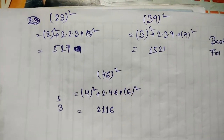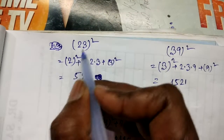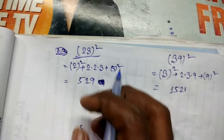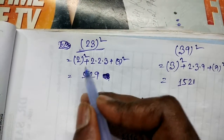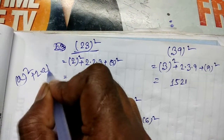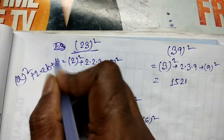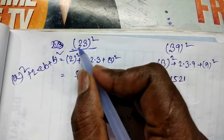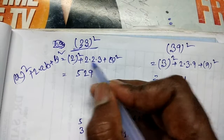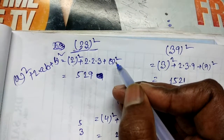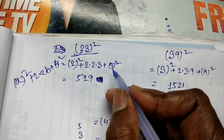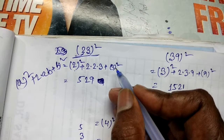Let's start. First, look at the number 23. We know the formula: a² + 2ab + b². Apply that one — a² + 2ab + b².